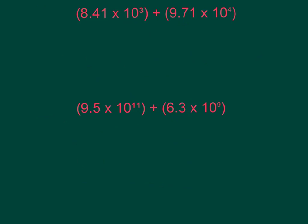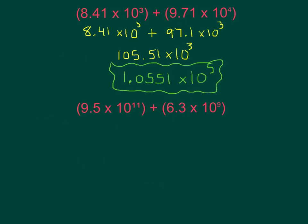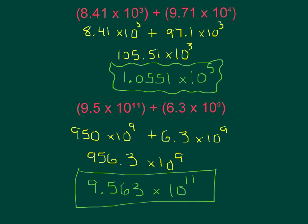Here we have two examples. I want you to pause the video, write them down, and see if you can do them on your own. Then come back to check your answer. The answer to the first one is 1.0551 times 10 to the power of 5. For the second one you should get 9.563 times 10 to the power of 11. Just remember: create like terms, add or subtract your coefficients, change back to proper scientific notation.